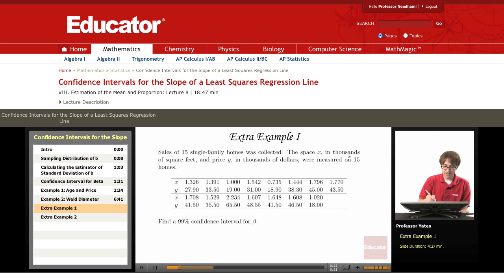We want to find a 99% confidence interval for beta. So alpha equals 0.01 for a confidence interval. We're interested in alpha over 2, which is 0.005. N equals 15. Let's start summing these values.